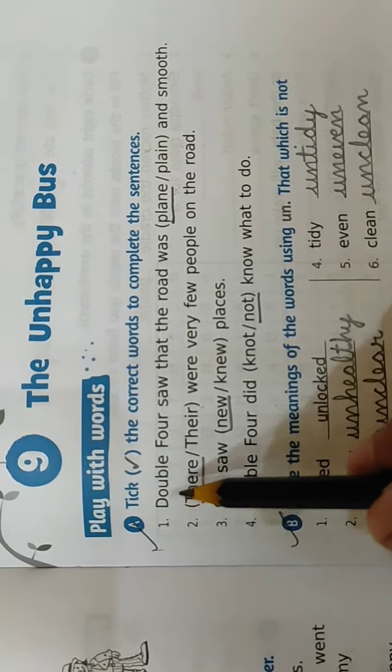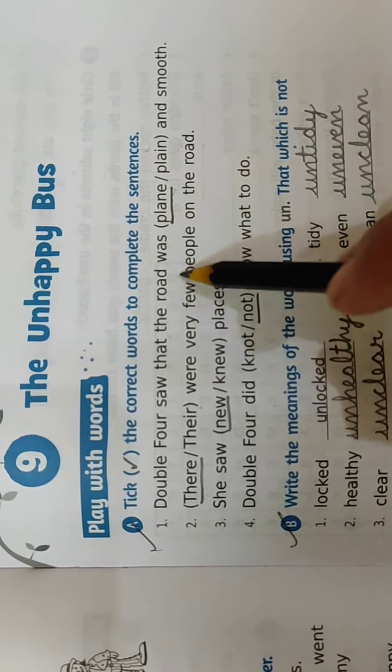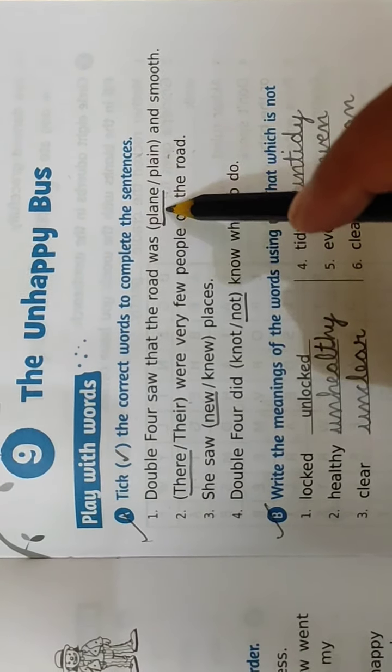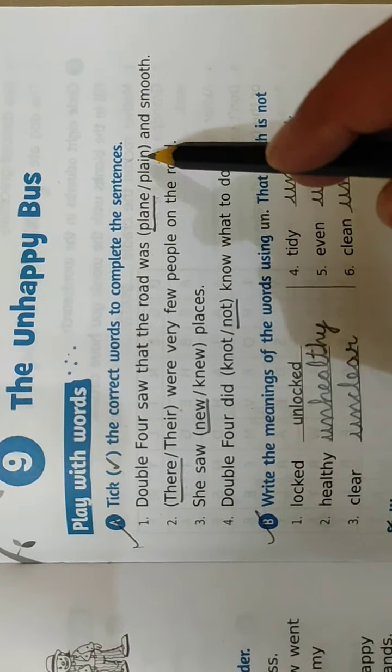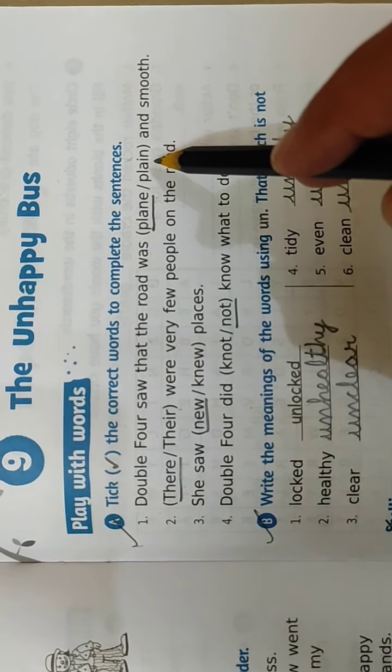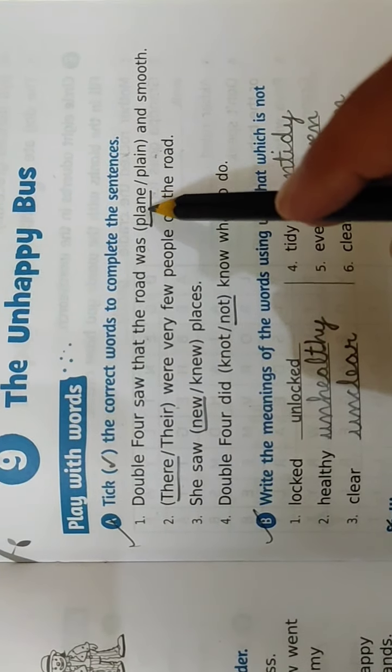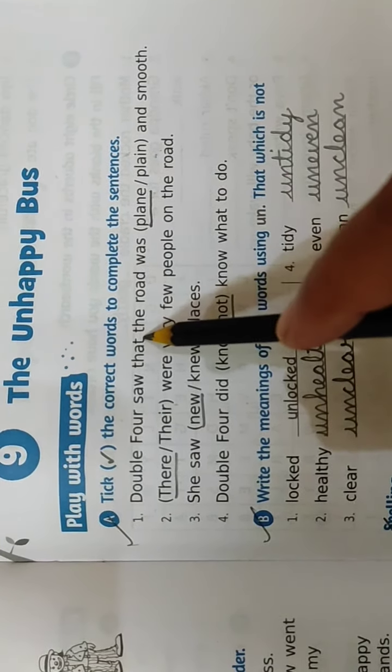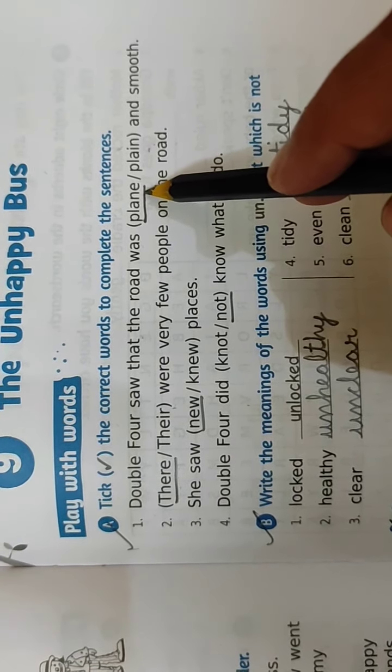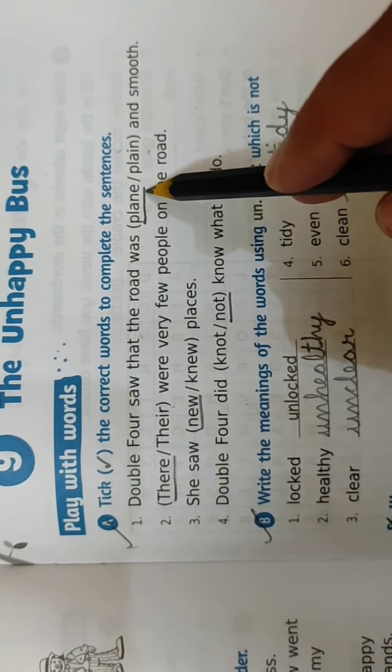Number 1 is, Double 4 saw that the road was plain and smooth. Now children, here in the bracket two words are given. The pronunciation is the same, but the spellings are different and the meaning is also different. So you have to see which is the correct answer according to the sentence. So here, P-L-A-N-E is the correct word. So underline P-L-A-N-E, plain.